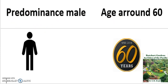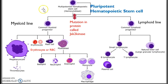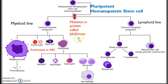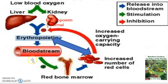This condition is predominant in men aged around 60, give or take five years, and it's caused by a mutation in a protein called JAK2 kinase, or JAK2 for short. This mutation happens at the level of the pluripotent hematopoietic stem cell.